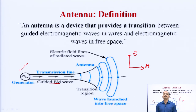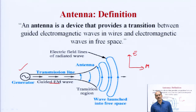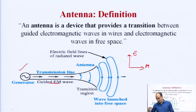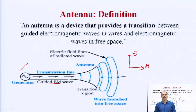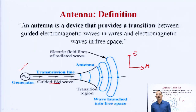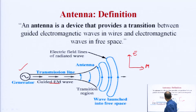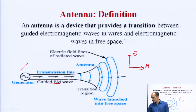Jab bhi hum ek wire ko open space mein laate hain, wahan par teen cheezein ho sakti hain: ya to woh information ko radiate karega, ya phir woh us information ko system ke andar dissipate kar dega, ya phir usko reflect back kar dega. But antenna ke andar hamara sara ka sara jo electrical signal hai, woh electromagnetically aapka atmosphere mein release ho jaata hai. Kyunki positive aur negative dono ends banne ke baad yahan par electromagnetic field create hota hai, aur wohi electromagnetic field us applied voltage ki wajah se atmosphere ke andar aapki electromagnetic waves ko radiate karta hai.